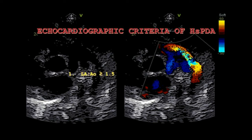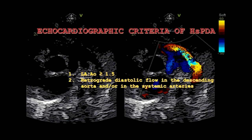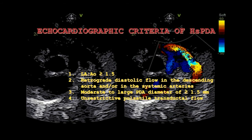Enlargement of the left atrium with a left atrium to aortic valve ratio greater than or equal to 1.5. Absent or retrograde diastolic flow in the descending aorta and systemic arteries. A moderate to large PDA diameter greater than or equal to 1.5 mm at the narrowest point. And an unrestrictive, pulsatile, transductal flow.